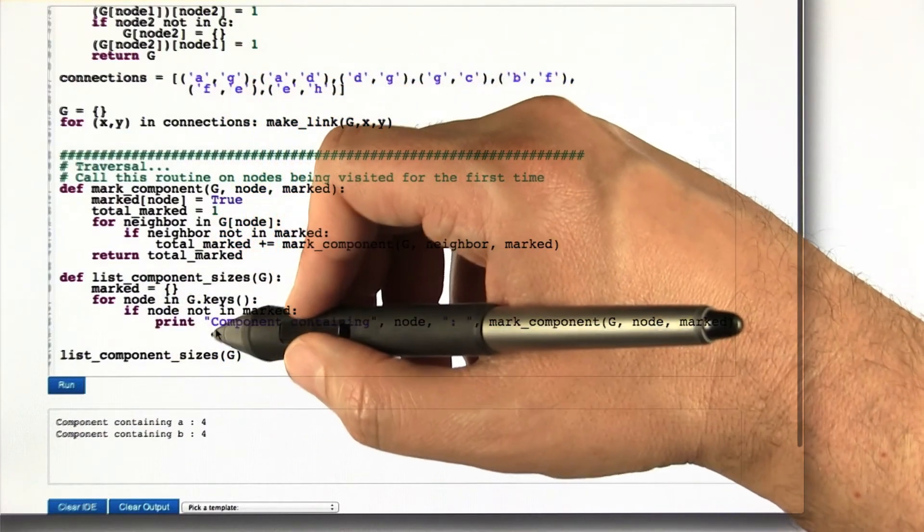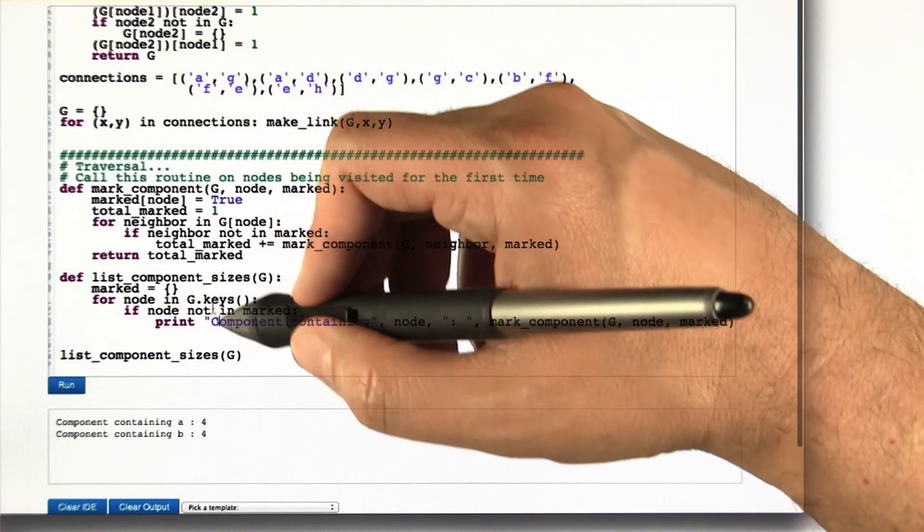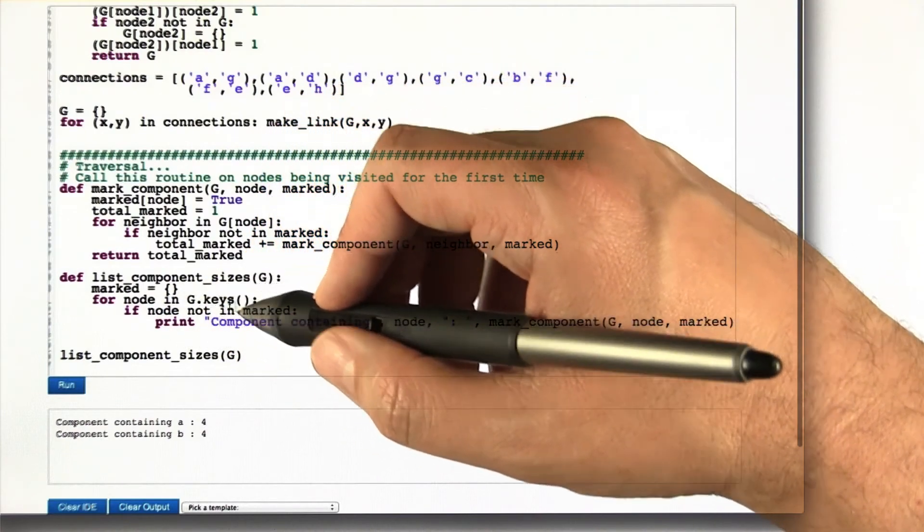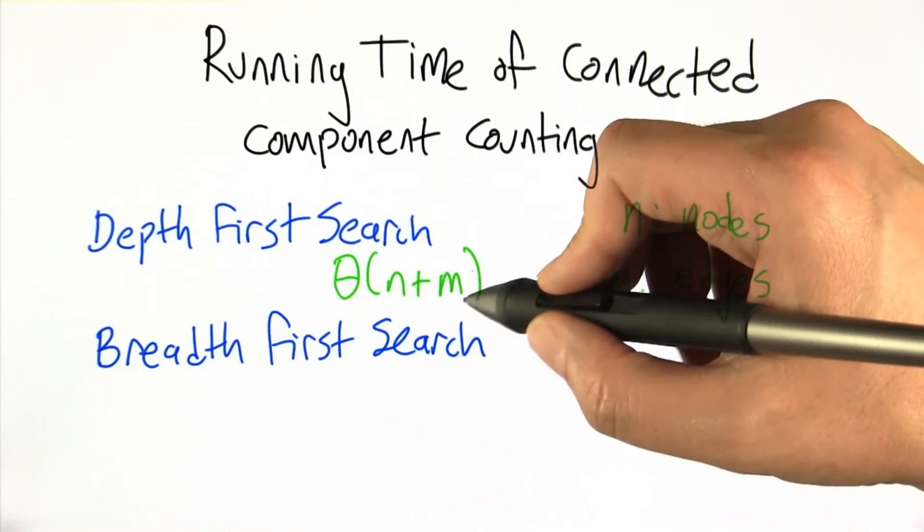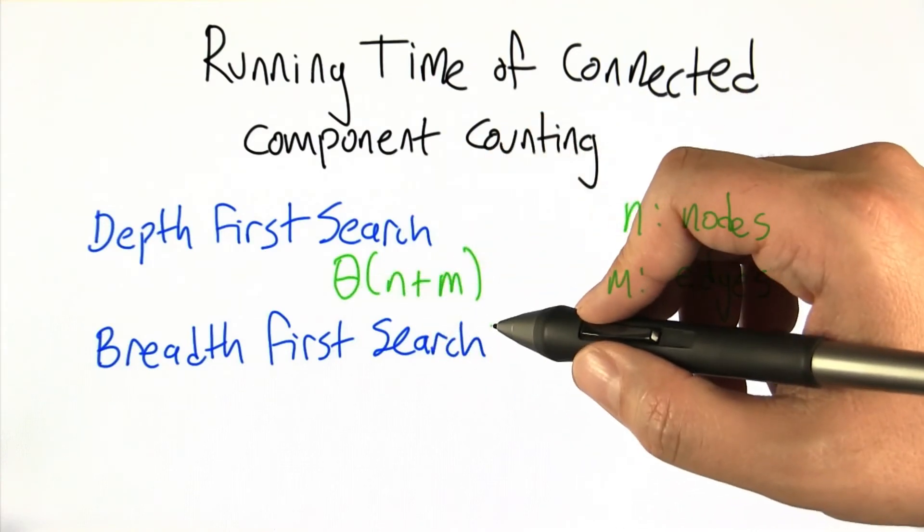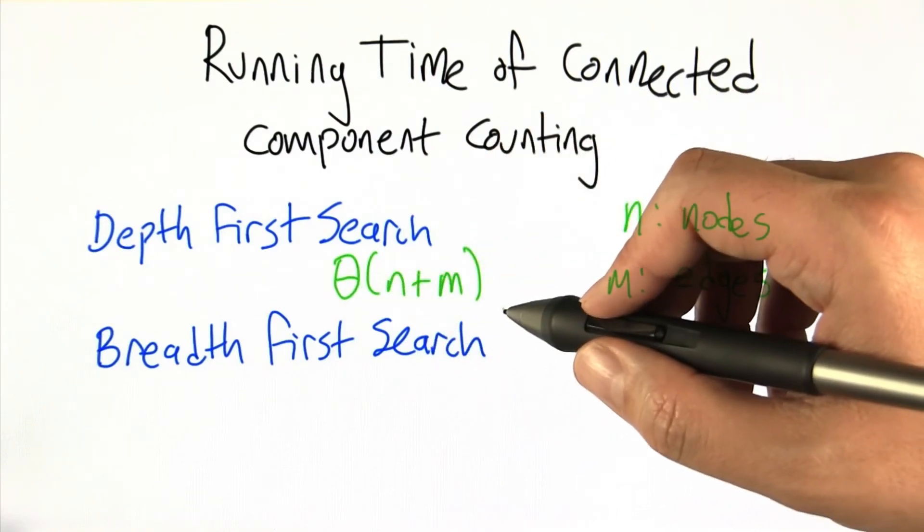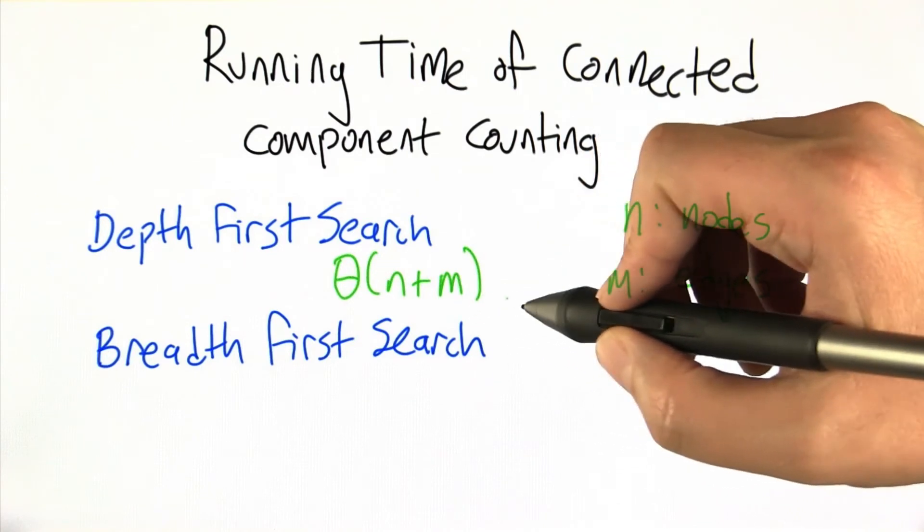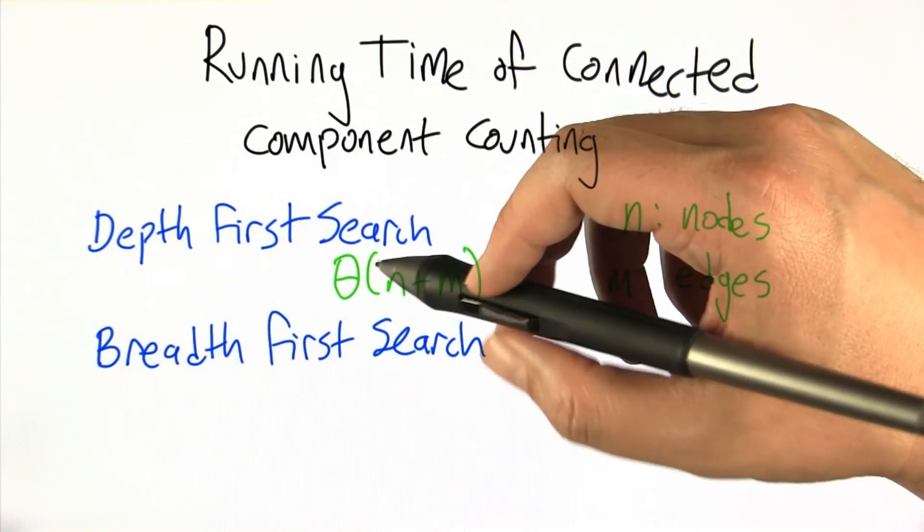We're going to do some work, but not more than constant work per node. If we look at our running time here, adding another n in here doesn't change the big theta. Even though it's very complex to figure out which statements are executing when, the actual running time is big theta of n plus m.